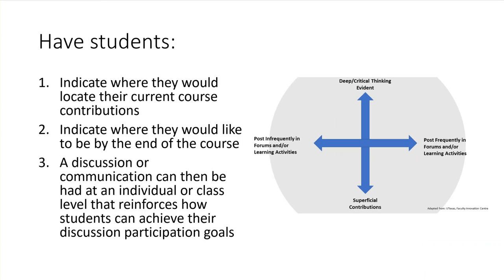In order to use this strategy, you can have students indicate where they would locate their current course contributions on the two axes. Then you can have students indicate where they would like to be by the end of the course. So students ask themselves how frequently or infrequently they are posting now, and how they understand the depth of their contributions to class discussions up to that point in the term. Then they can think about where they would like to be by the end of the term.